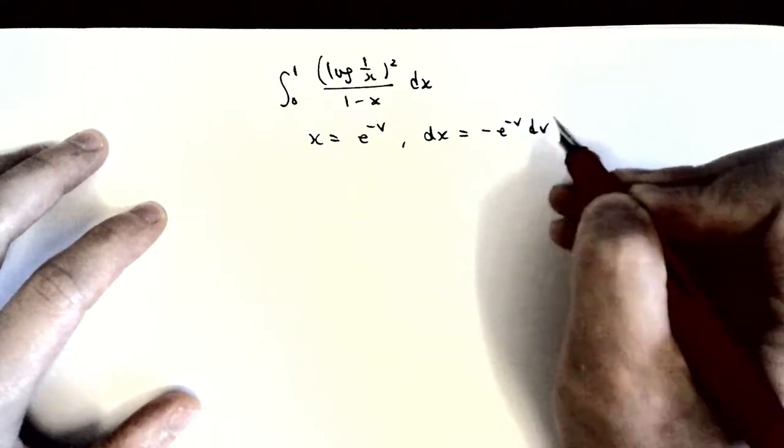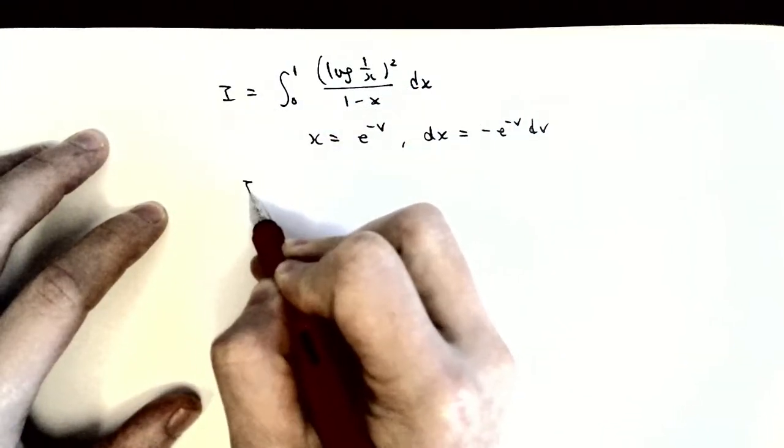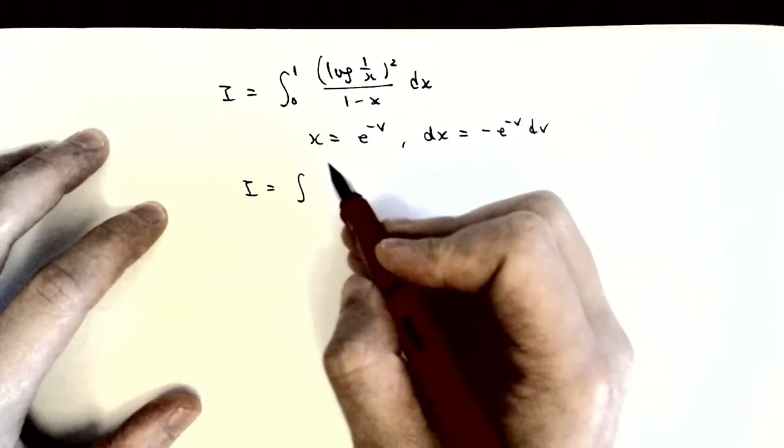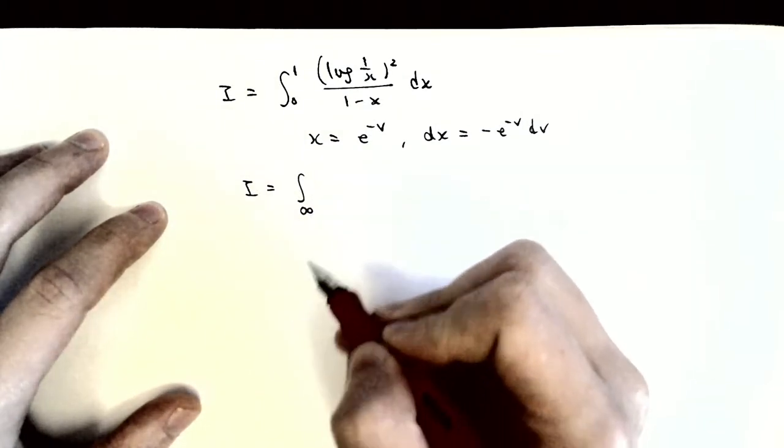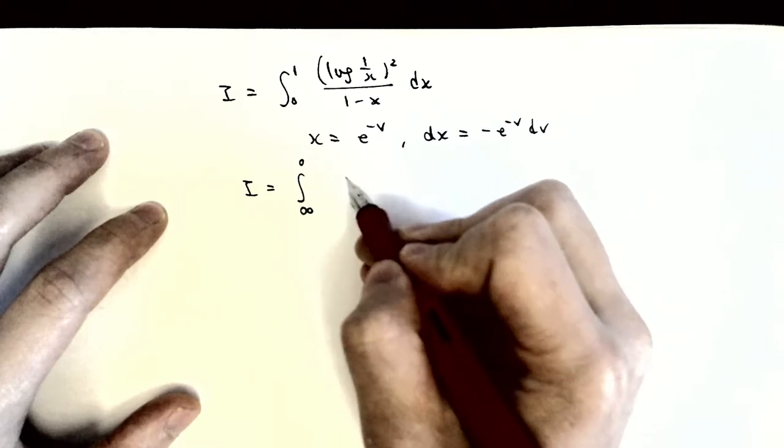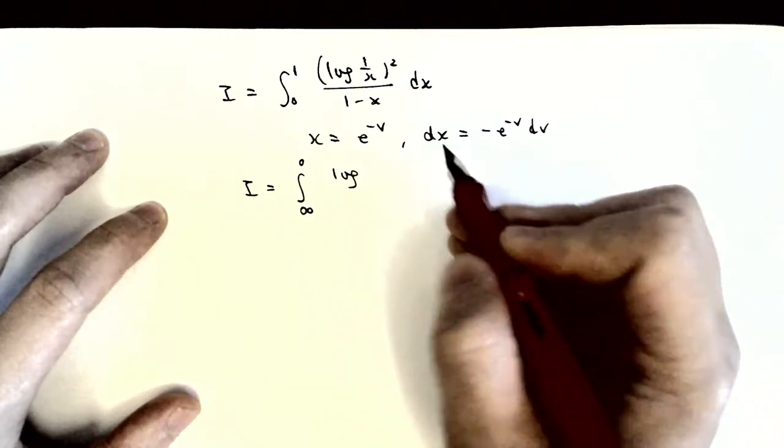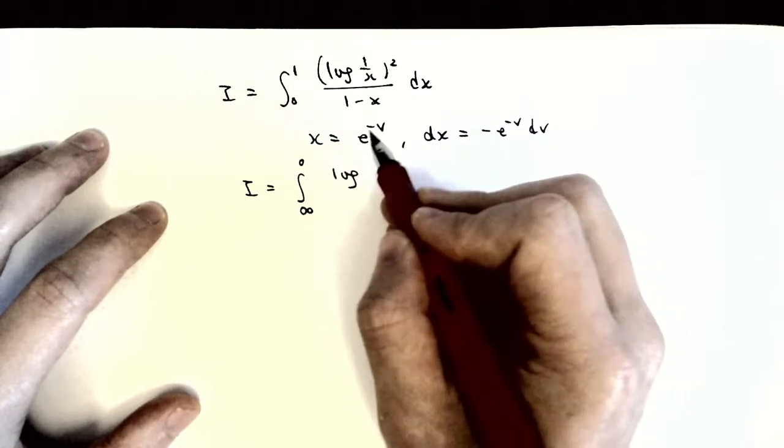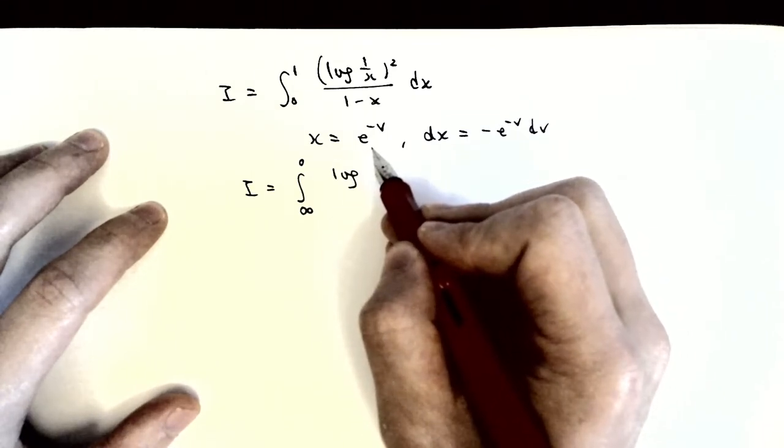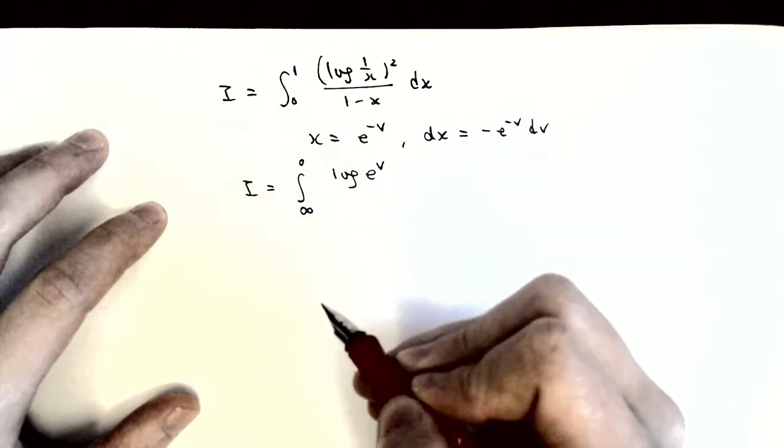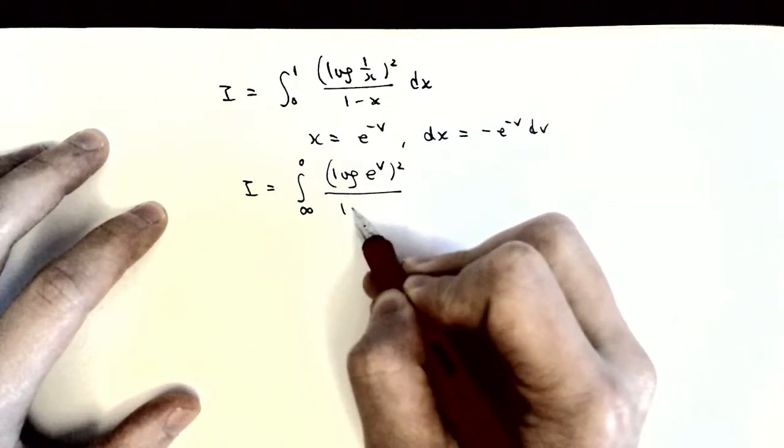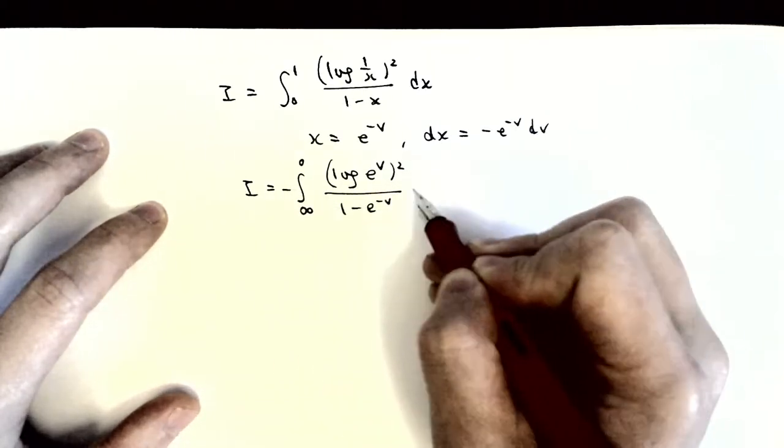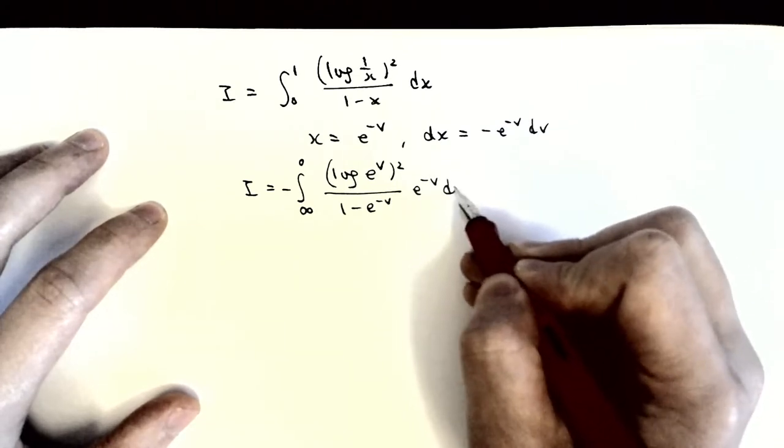Then dx equals minus e to the minus v dv. The integral becomes: when x is 0, v will become infinity, and when x is 1, v will be 0. Then log of e to the v squared over 1 minus e to the minus v, times minus e to the minus v dv.